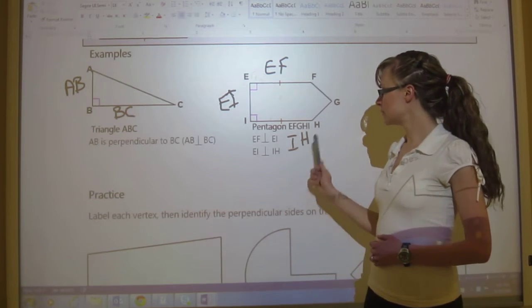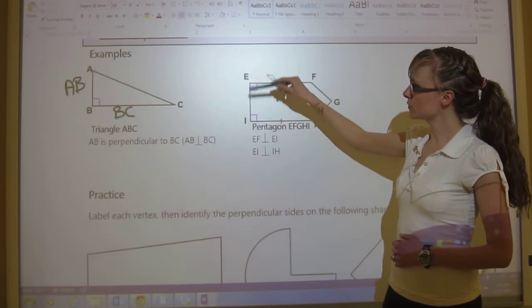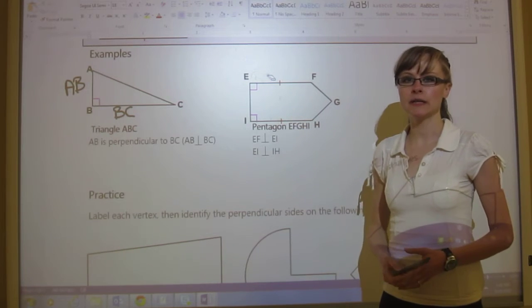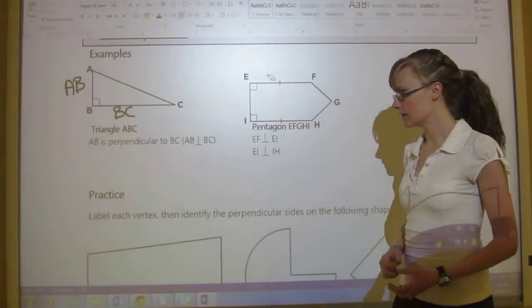So those are, that's how you would write that. And that's the reasons why those are named that. Because those are the corners. So this is EI, because E comes before I, and those are the corners that create that side.